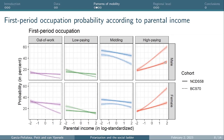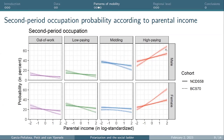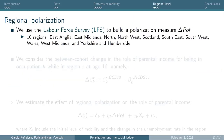What we observe is that if you are at the top of the parental income distribution, the likelihood of starting in a high-paying occupation has increased for both men and women, whereas for those at the bottom, this doesn't change. Looking at the second-period occupation at age 42, people along the parental income distribution do not have the same chances of ending up in different occupations, and this has worsened over time between the two cohorts.